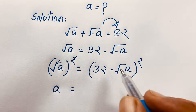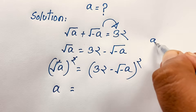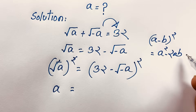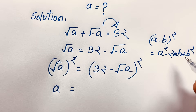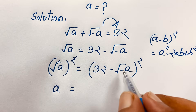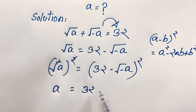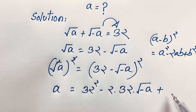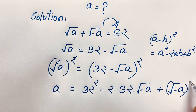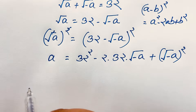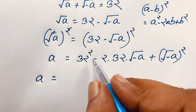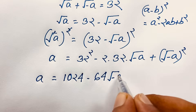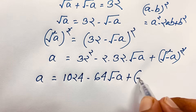For the right side, I apply the formula (a − b)² = a² − 2ab + b². Here a is 32 and b is square root of negative a. So the expansion gives: 32² minus 2 times 32 times square root of negative a, plus the square of square root of negative a. That gives us: a = 1024 minus 64 times square root of negative a, plus negative a.